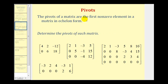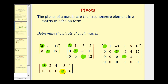Next, the pivots of a matrix are the first non-zero elements in each row of a matrix in row echelon form. For example, four and six are the pivots of the first matrix. Two, five, and negative four are the pivots of the second matrix. For the third, the pivots are two, eight, and positive two. Notice the zero row does not give us any pivots since pivots are non-zero elements. For the last matrix, the pivots are negative three and positive two.